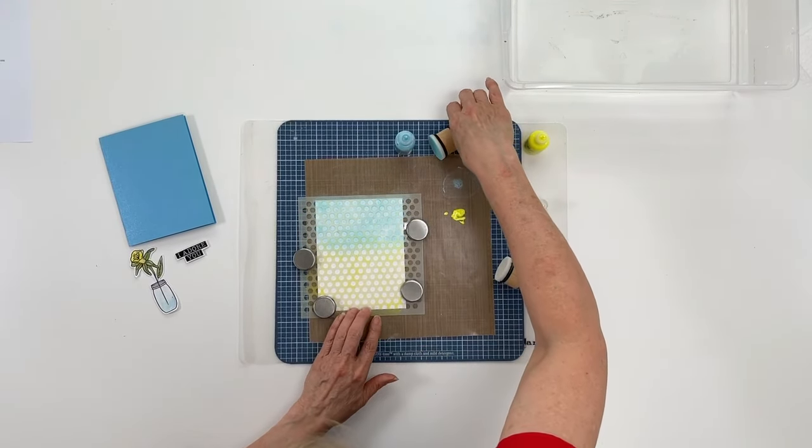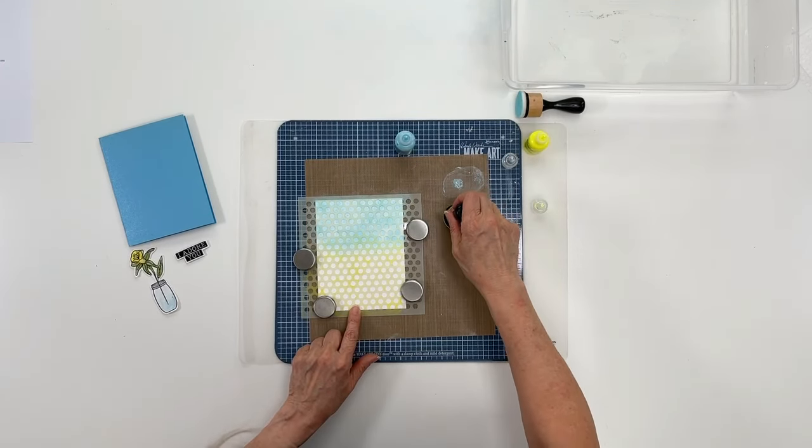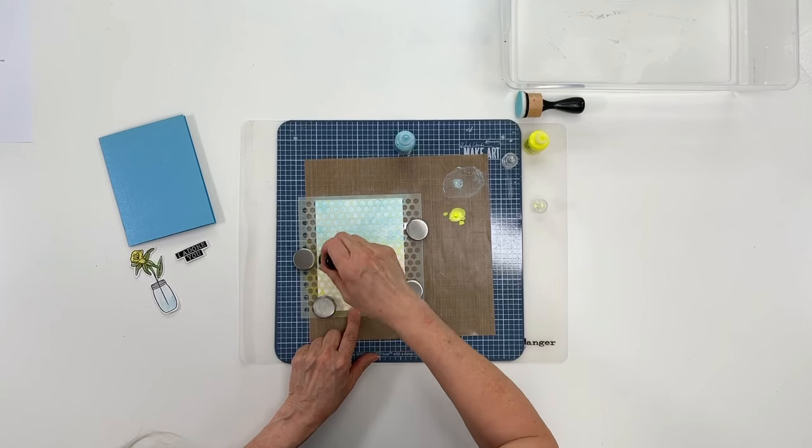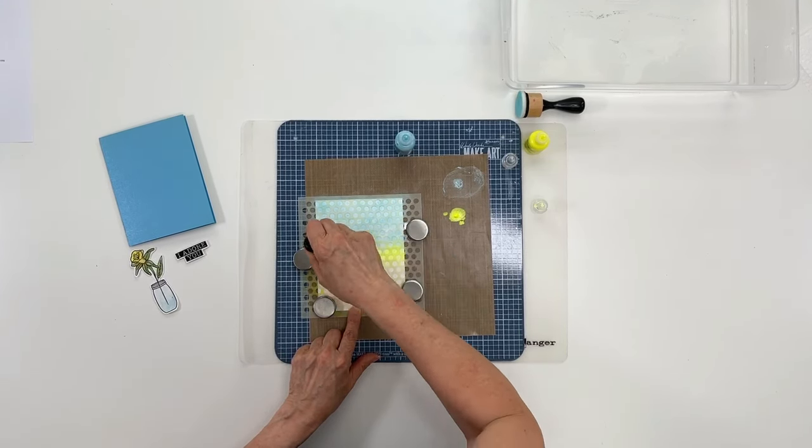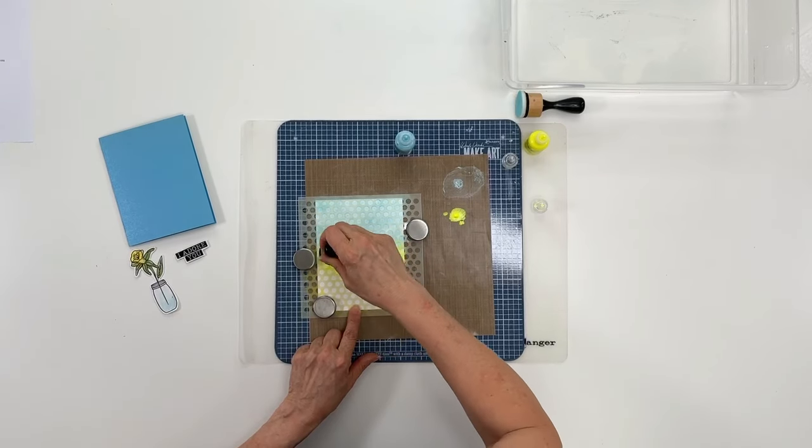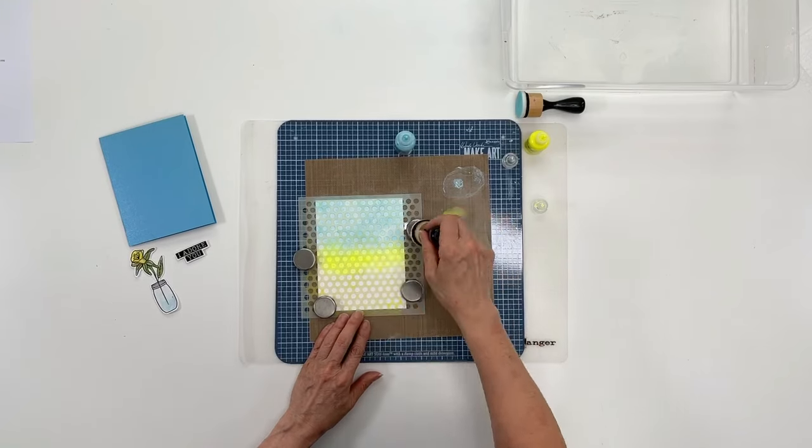Next I'm going to do yellow. Since yellow and blue makes green, you get a nice little blend here at the seam. You'll see it later when I take it off.